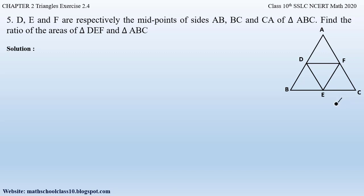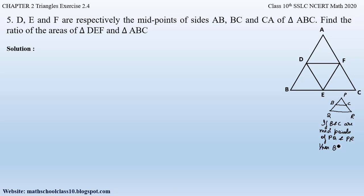Therefore, let us use a theorem from our previous classes: if there is a triangle PQR, and B is the midpoint of PQ and C is the midpoint of PR, then joining these two points gives line BC which is parallel to the third side QR, and BC is equal to half of QR. So if B and C are midpoints of PQ and PR, then BC is parallel to QR and BC equals half of QR.